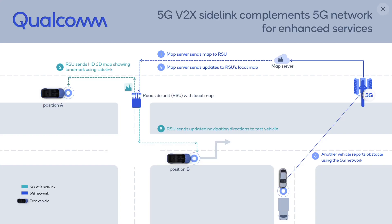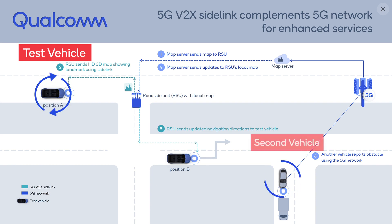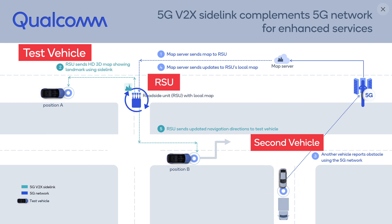Here is a slide showing our demo setup. The test vehicle is equipped with 5G V2X capability. A second vehicle detects an obstacle which is not visible to the test vehicle from its current position, and a roadside unit covering the local area. The range of the RSU is 125 meters, and the test vehicle starts its path approximately at that distance.